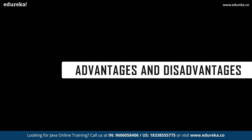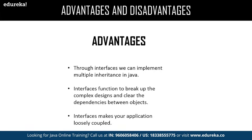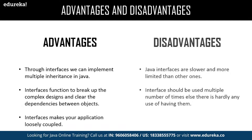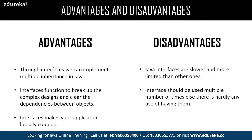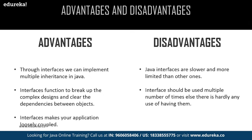Let us get into the major advantages and disadvantages of interfaces. Advantages: we can achieve multiple inheritance in Java, we can easily break up complexity and enable clear dependency between objects, and we can achieve loosely coupled applications through an interface. Disadvantages: Java interfaces make the application slower compared to competitors like Python which support multiple inheritance. Also, once an interface is included in an application, it might be used occasionally or end up being used multiple times at a larger scale.